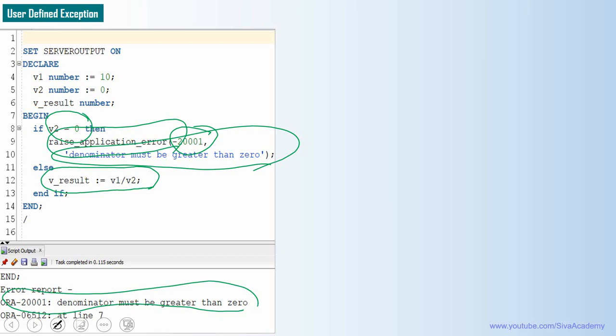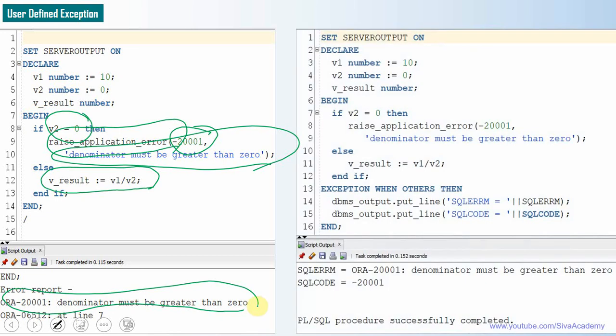To get the detail about this message, we can use the SQLERRM and SQLCODE. In fact, SQLERRM will return the same exception like the way we saw in the previous example. Same way SQLCODE will return the code what we defined here. In this case, it is 20001.